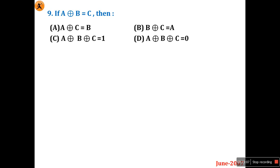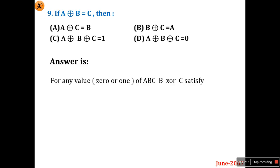Question nine: if A XOR B = C, then which option satisfies the condition? For any values of 0 or 1 for A, B, C — B XOR C equals A. So option B (B XOR C = A) is the right answer.